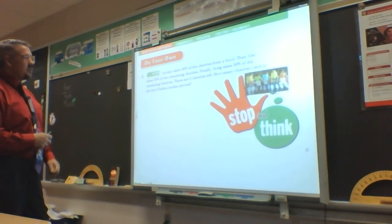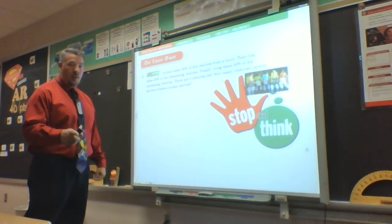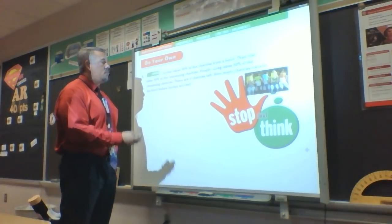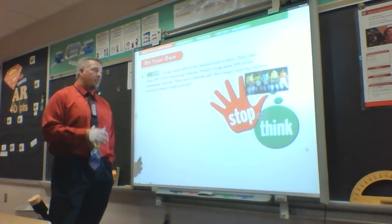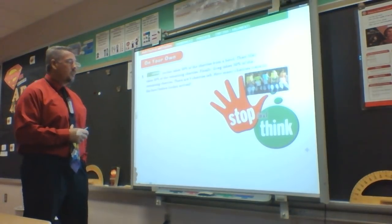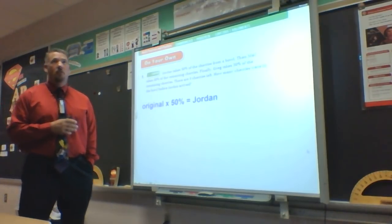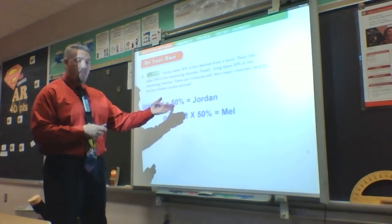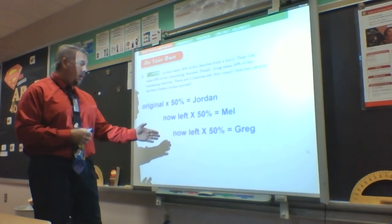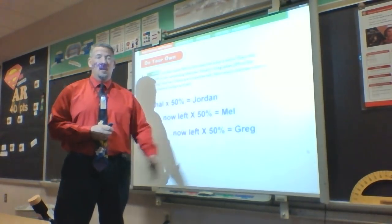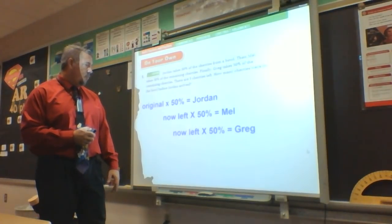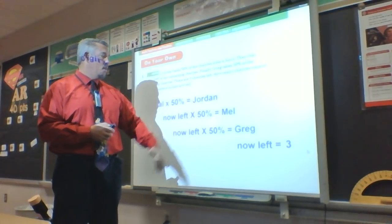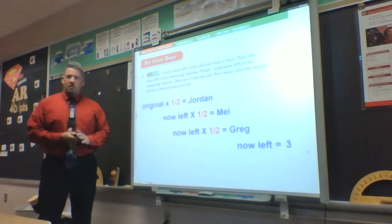Now this next one is a little tricky — you have to think about it. Jordan takes 50% of the cherries from a bowl. Then May takes 50% of the remaining cherries. Finally, Gray takes 50% of the remaining cherries. There are three cherries left. How many cherries were in the bowl before Jordan arrived? Changing those into fractions: of the original amount, half was Jordan's. Of what was left, half was May's. Of what remained, half was Gray's. I know I'm left with three — it gets confusing on what it's asking.